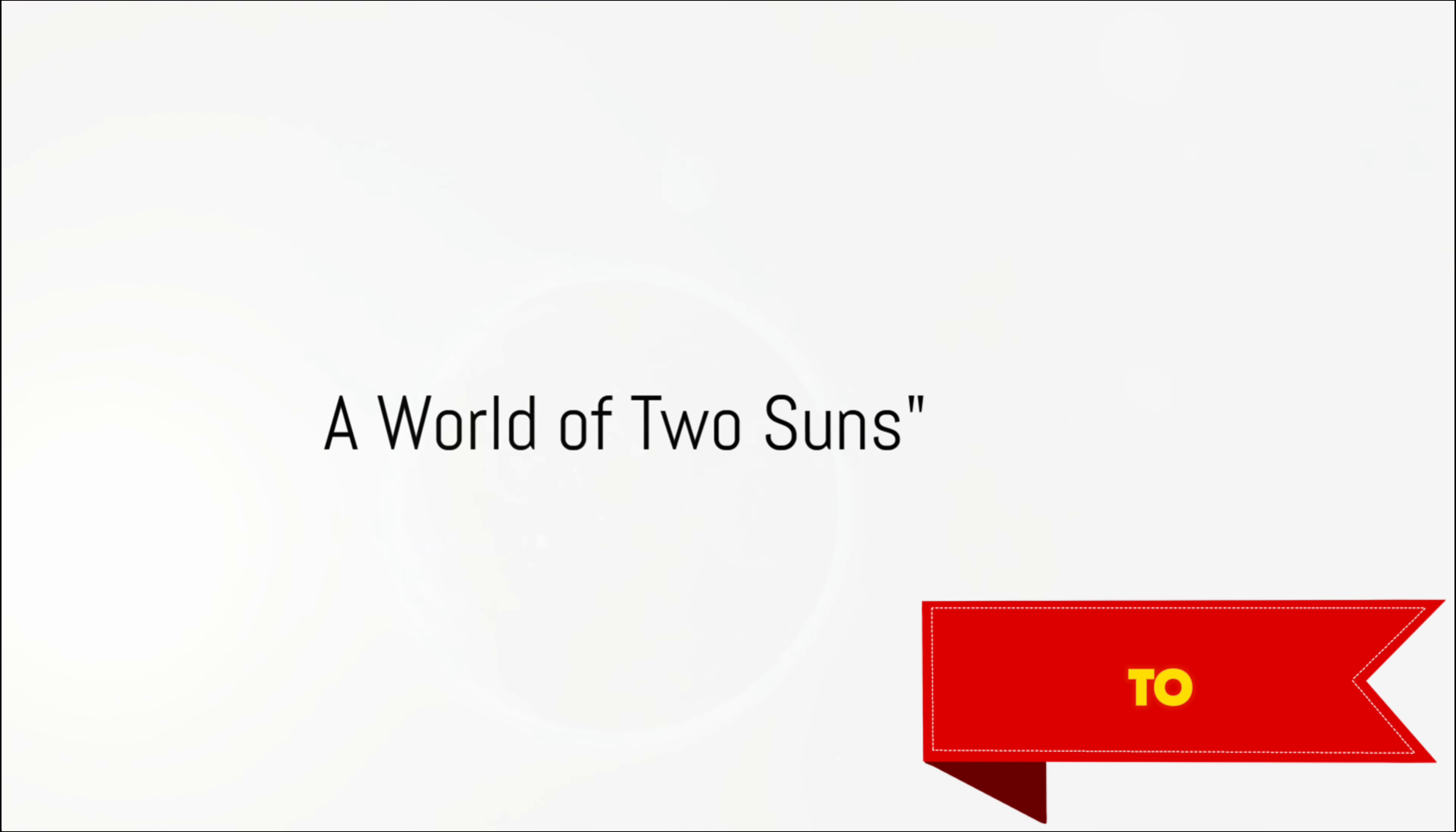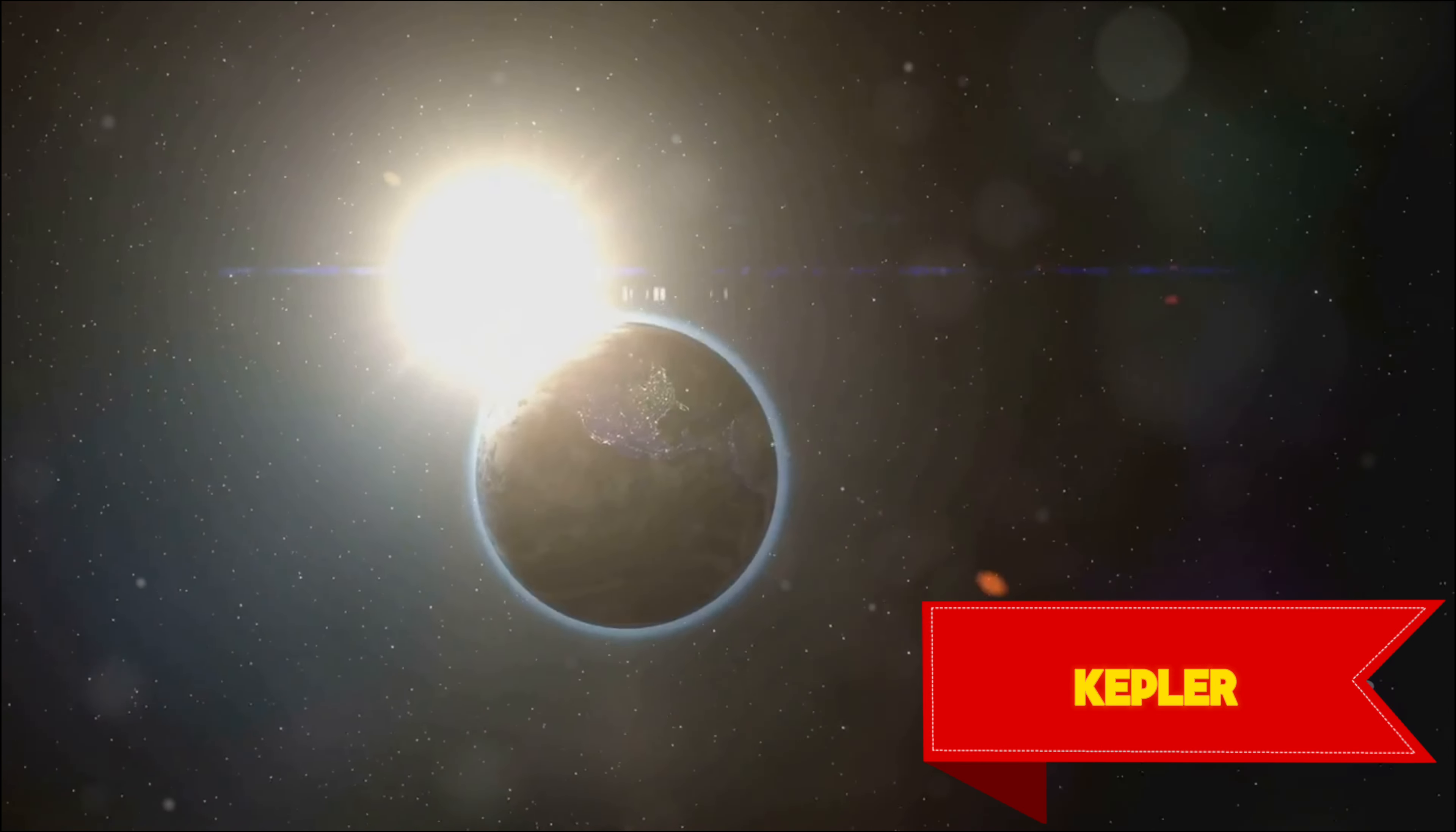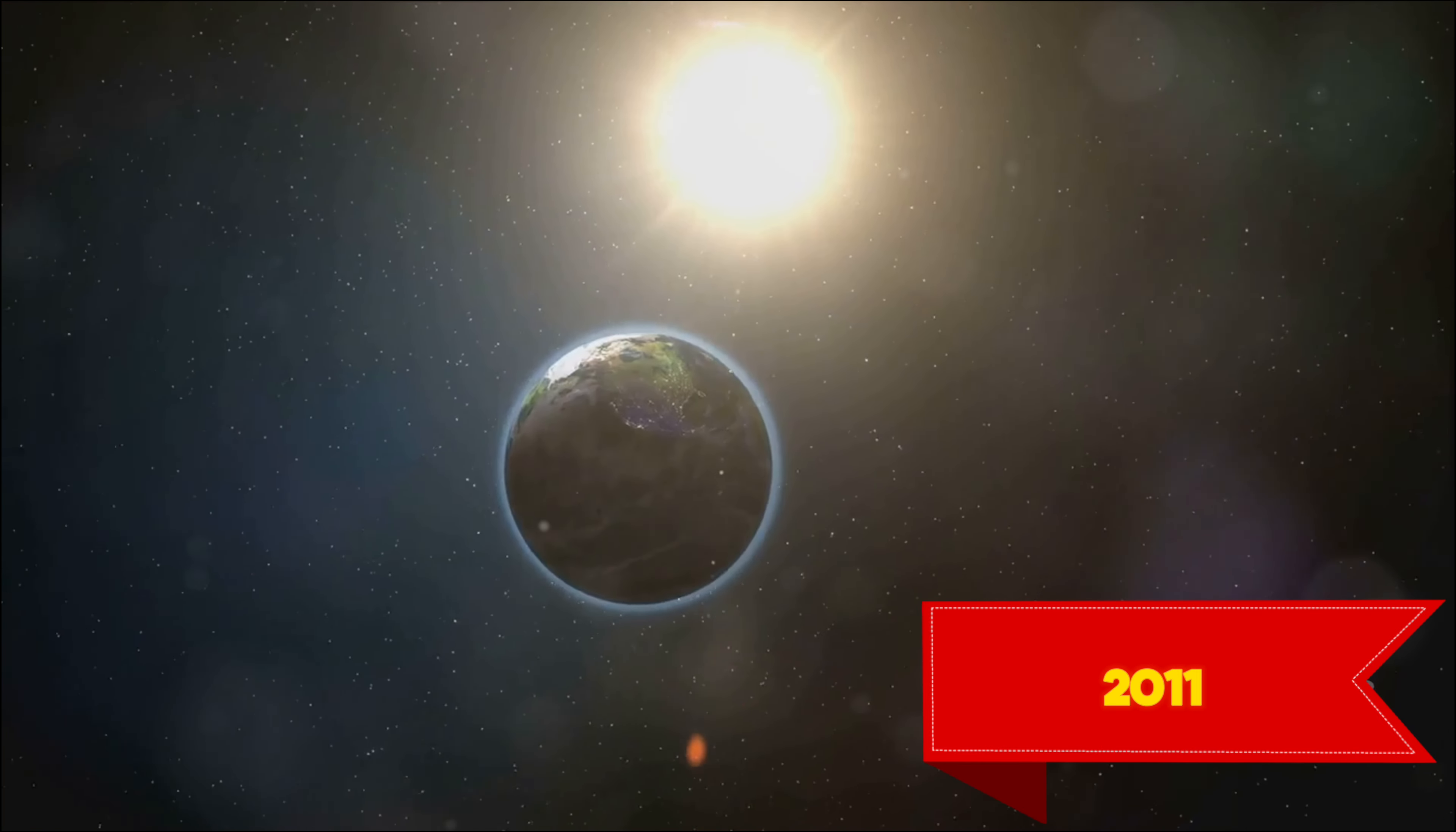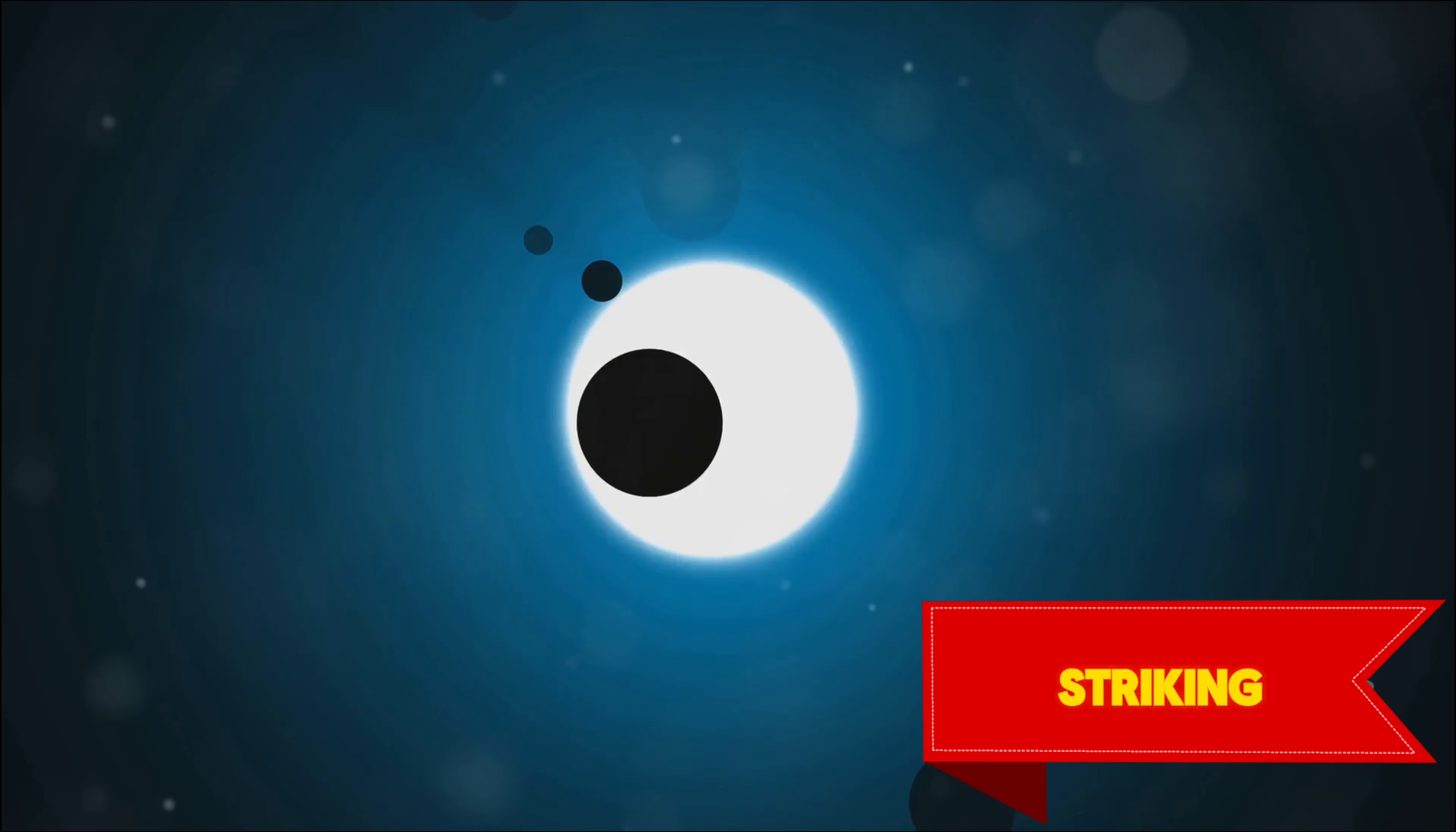From a single star system, we venture to a world with two suns, Kepler-16b, discovered by the Kepler Space Telescope in 2011. This exoplanet orbits not one but two stars, much like the fictional planet Tatooine from the Star Wars franchise. This unique binary system paints a striking image in the sky, with two suns setting instead of one.